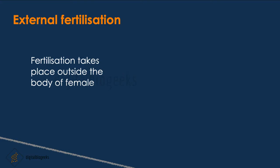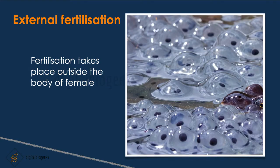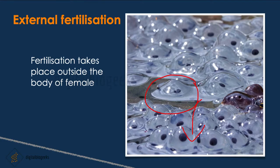Let's learn about external fertilization. In aquatic animals such as frogs and fish, fertilization takes place outside the body of the female — it is called external fertilization. During spring and rainy season, frogs and toads move to ponds. The female lays hundreds of eggs in water. Frog eggs don't have a shell and are very delicate; a layer of jelly holds them together and provides protection. The male deposits sperms over the eggs; the sperm, using its tail, fuses with the egg to form a zygote. Since the eggs are laid in water and may be carried away, frogs lay hundreds of eggs to ensure fertilization of at least a few.